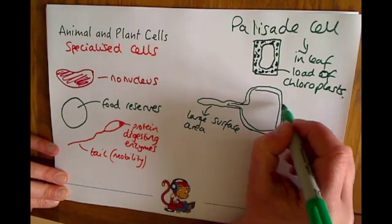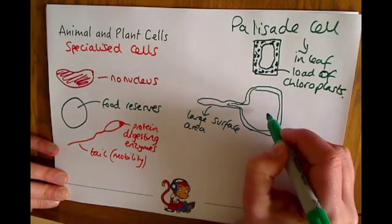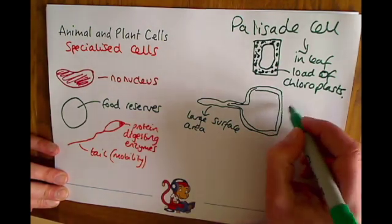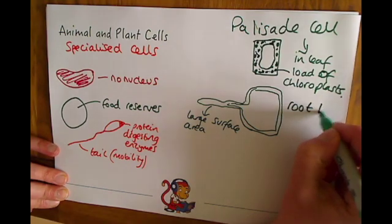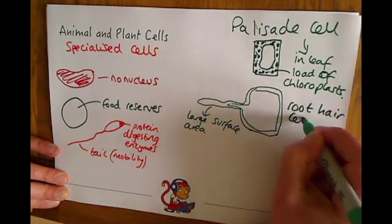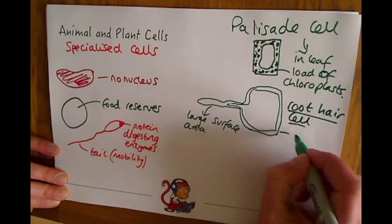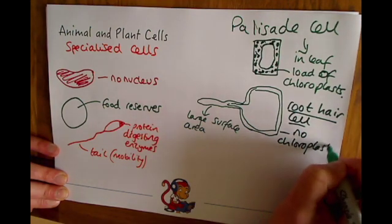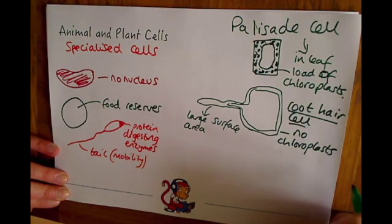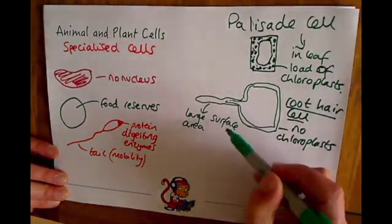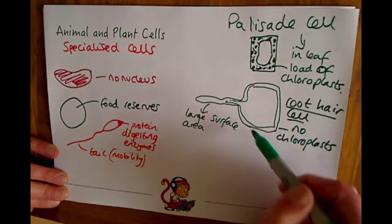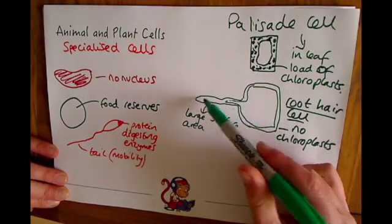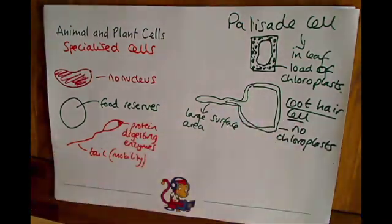For absorption of water or absorption of minerals. And inside there's no point having chloroplasts, because it's going to be underground. So the root hair cell on the other hand, it's going to have no chloroplasts. Because it's not going to be anywhere where it's going to be able to absorb any sunlight. So there's no importance for this cell to have chloroplasts. Instead, it's going to concentrate on being a very specific shape to absorb water and minerals from the ground.